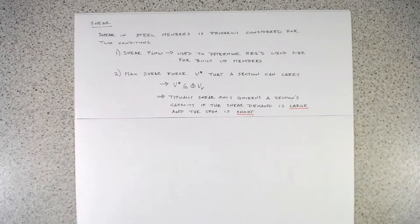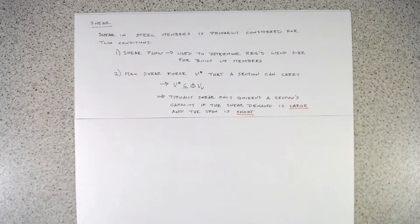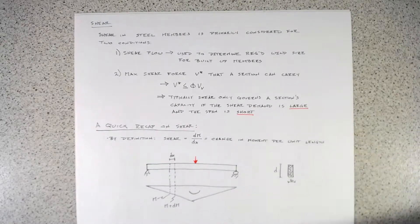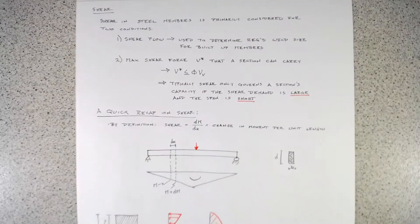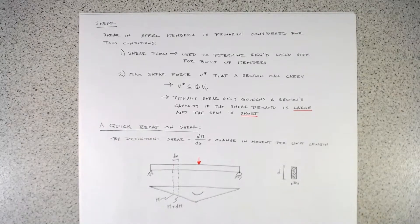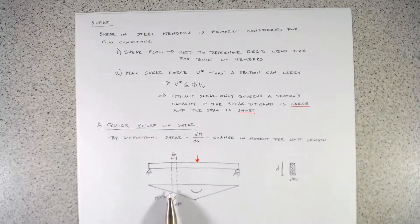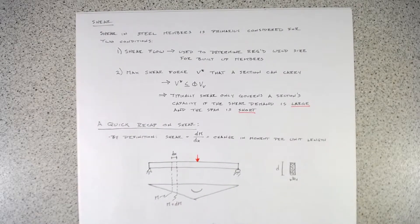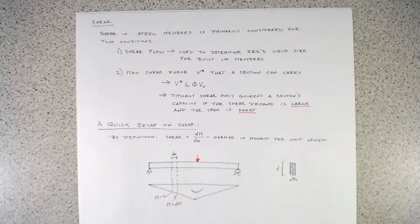That's the two conditions which we'd look at. But before we go further, I thought it would be good if we just do a quick review of what is shear, how does it manifest, and why do we see the particular equations that we have. For just a quick recap on shear, the important thing to know with shear is that by definition, shear is just the change of moment over a small length, over some length dx.